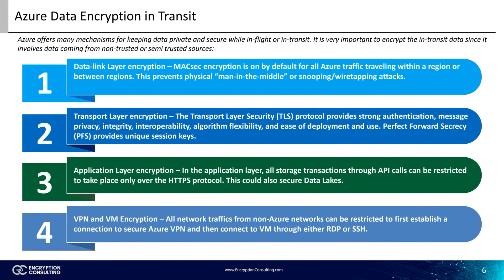MAC SEC primarily prevents attacks like Man-in-the-Middle or Snooping. The Transport Layer Security, or TLS protocol, enables strong authentication, message privacy, integrity, interoperability, and algorithm flexibility. It is also very easy to implement and use. The Perfect Forward Secrecy, or PFS protocol, provides unique session keys. In the application layer, all storage transactions through API calls can be restricted to take place only over the HTTPS protocol, barring the HTTP protocol. This can also secure data links.